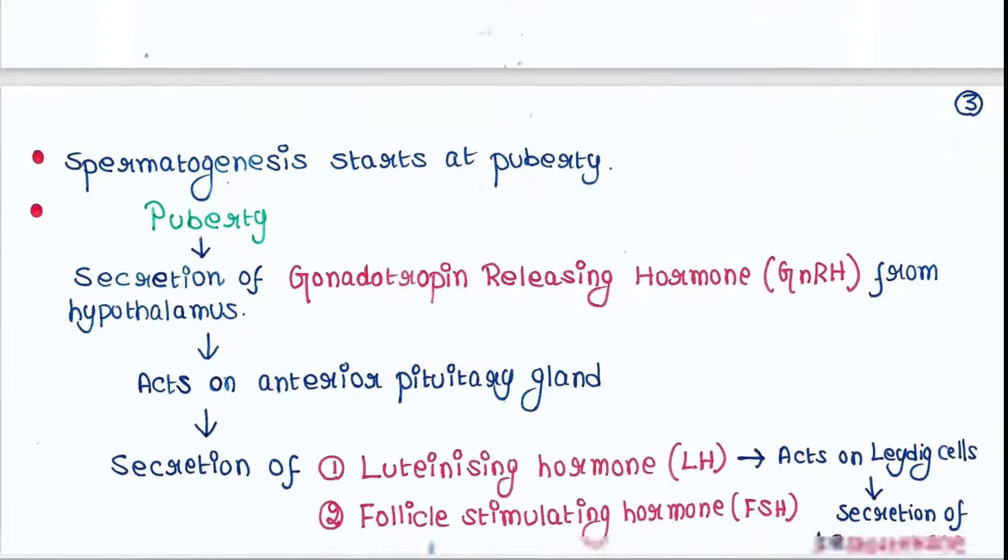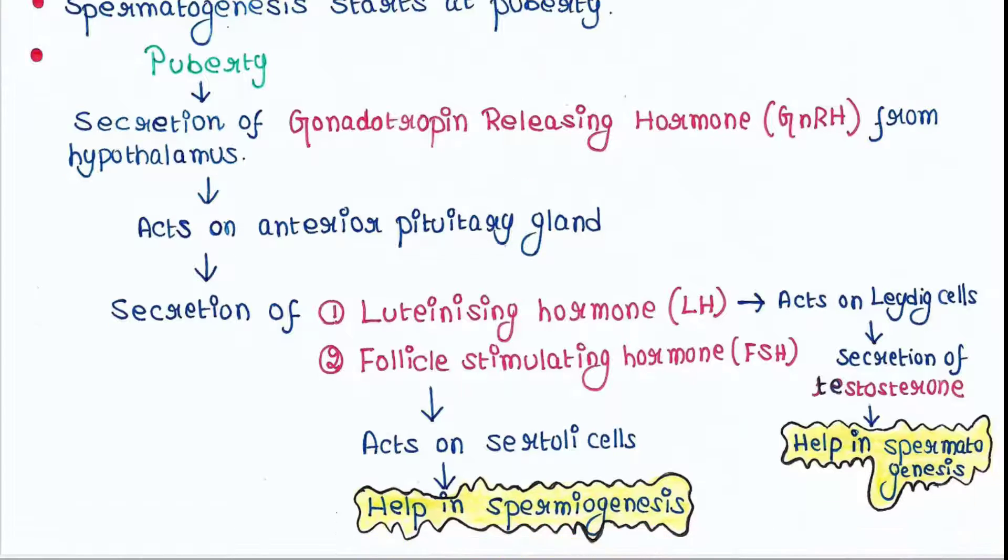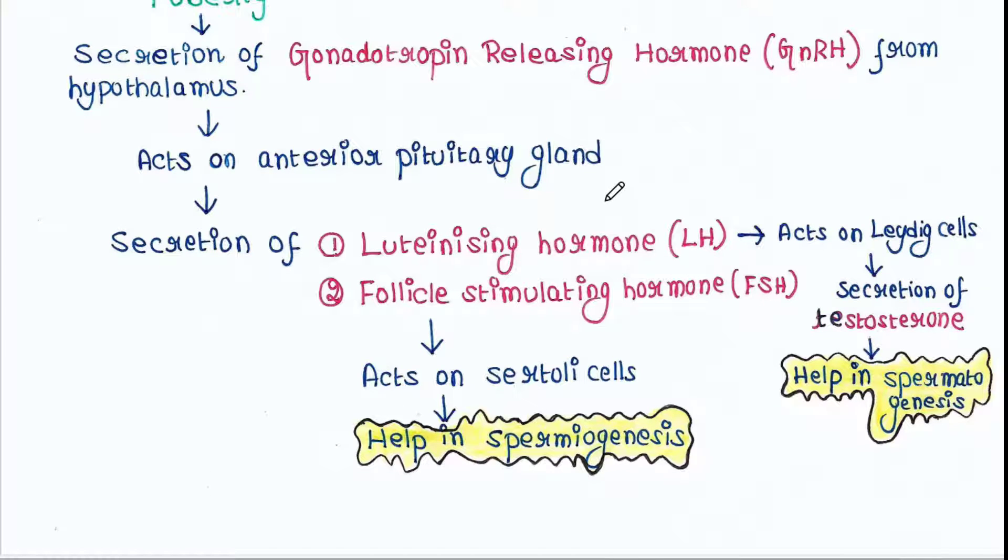Now spermatogenesis starts at puberty. So what happens in puberty? The secretion of gonadotropin releasing hormone, that is GnRH, from hypothalamus increases and acts on anterior pituitary gland. From anterior pituitary gland, two more hormones will be secreted.